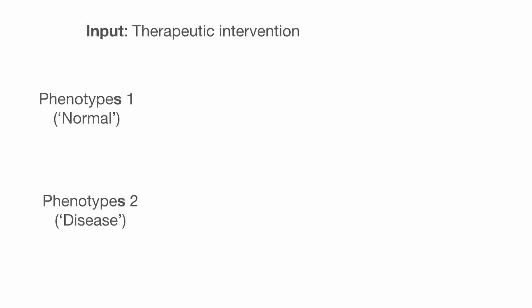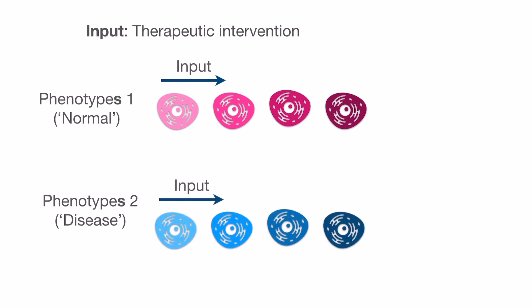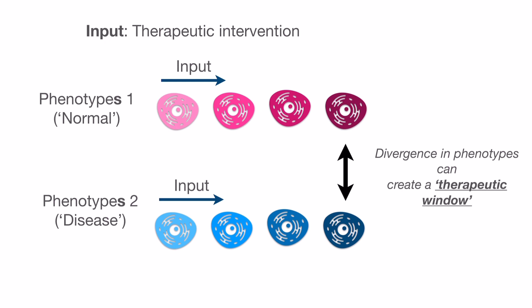So what it would mean is that if there is a therapeutic intervention, for example an input that is a drug that can kill the cells with some probability, this could happen differently for normal phenotypes versus disease phenotypes. And this divergence between the responses of normal cells and disease cells to the input, in this case a drug, is what we would term the therapeutic window.